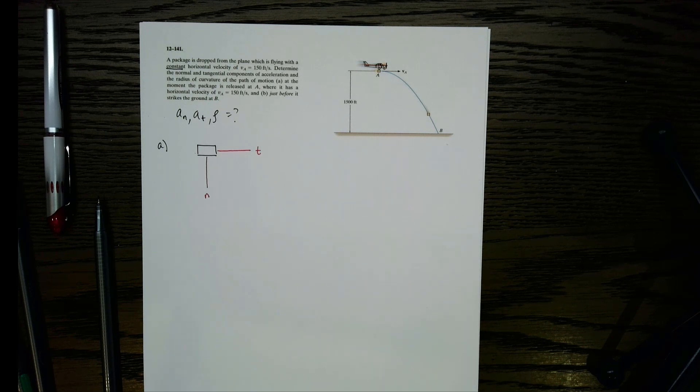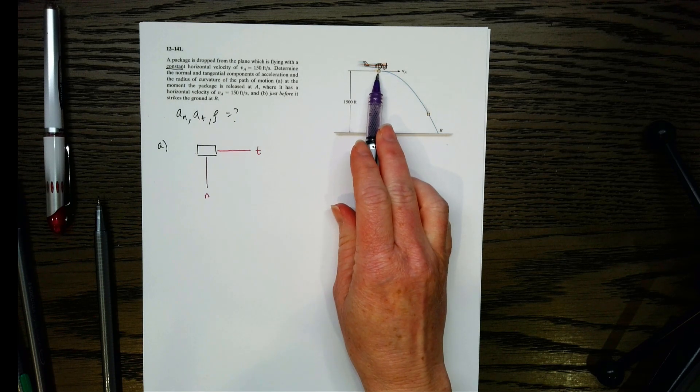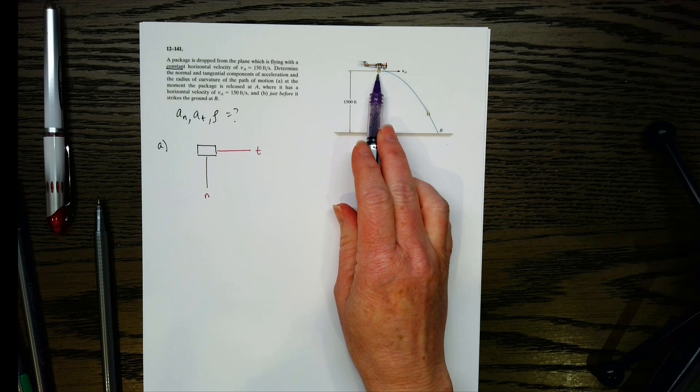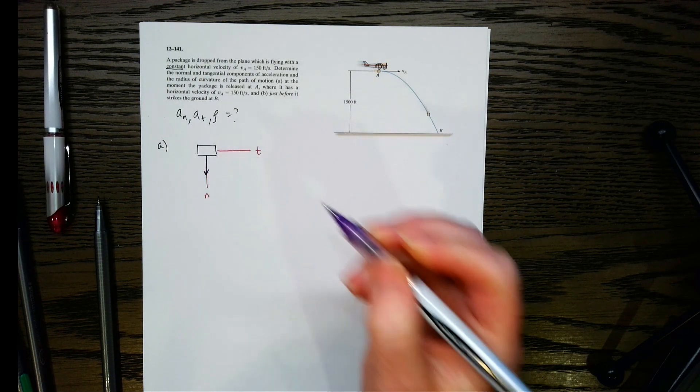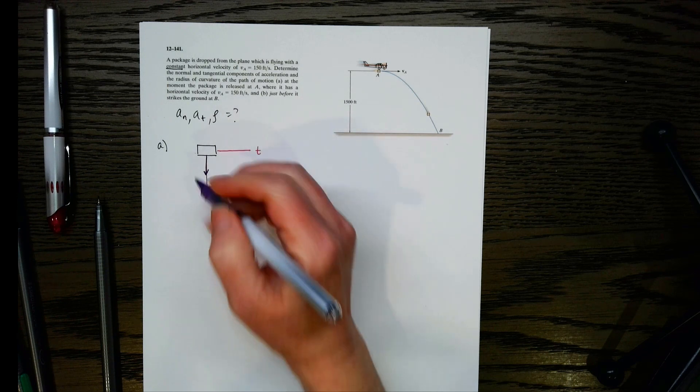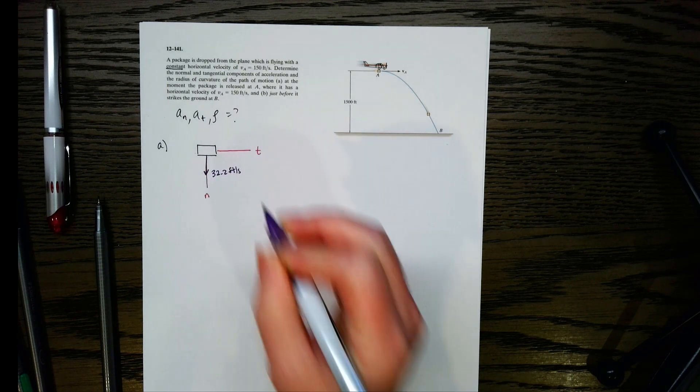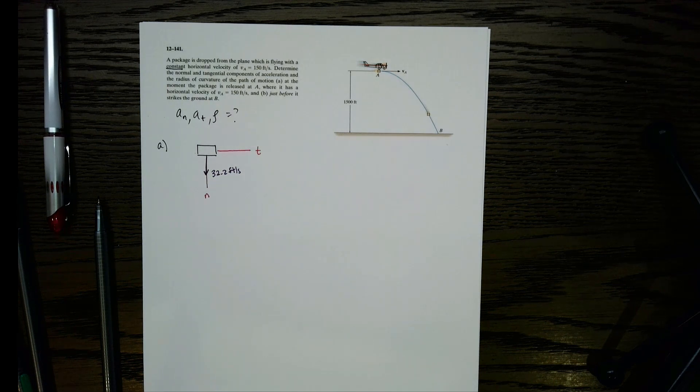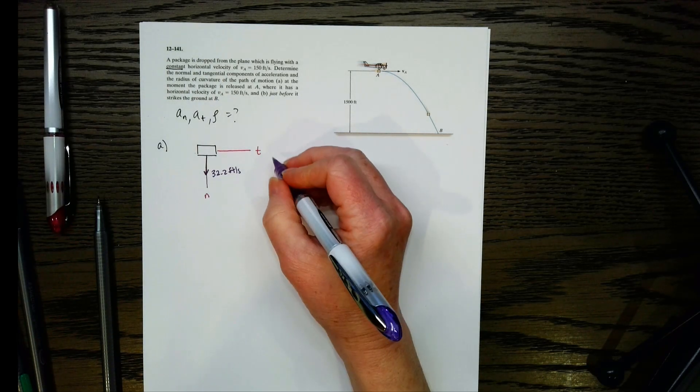Now we've got that, let's think about what acceleration we have. What's our magnitude of acceleration going to be on this one? Once this box drops, the only thing acting on it is going to be gravity, because we're looking at the package. So gravity is going to act straight down. Notice this is feet per second, so we're going to have 32.2.